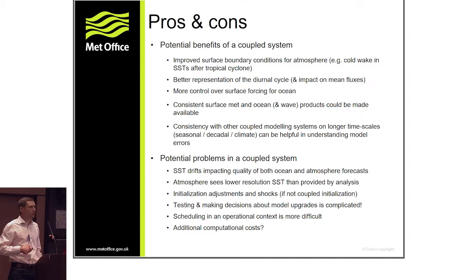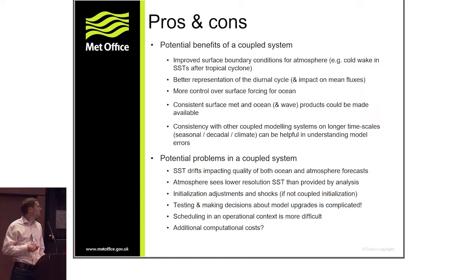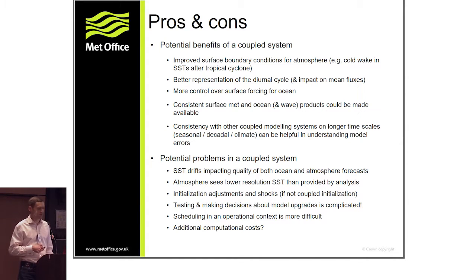The whole procedure becomes more complicated because with a coupled model you have to make decisions about where you judge model quality to be most important — whether that's in the atmosphere or the ocean — and how to make those decisions operationally. Scheduling can be quite important, with particular issues arising from different timescales in atmosphere and ocean data assimilation and delayed ocean observations. There may also be additional computational costs, although if you were going to run the systems separately that's not necessarily a problem.